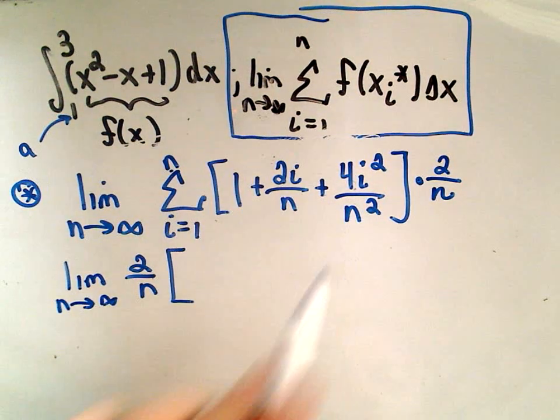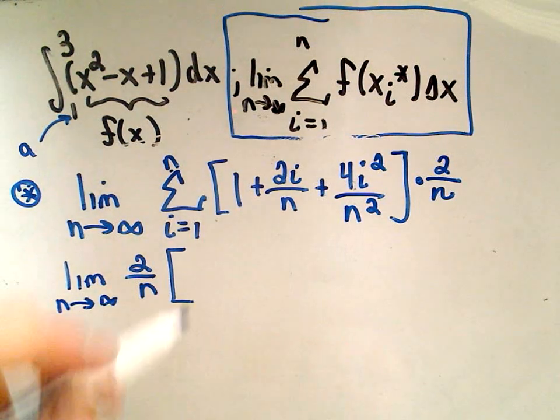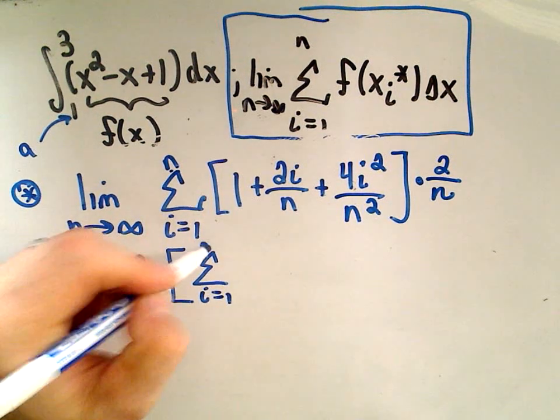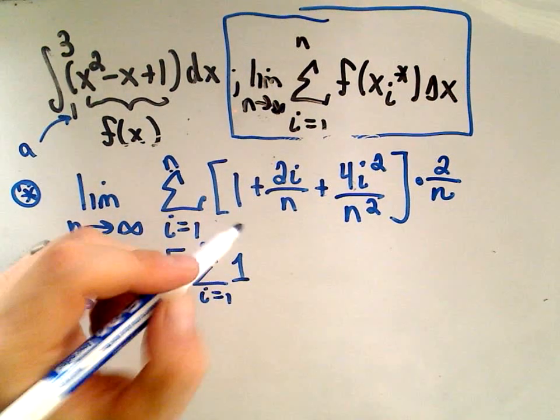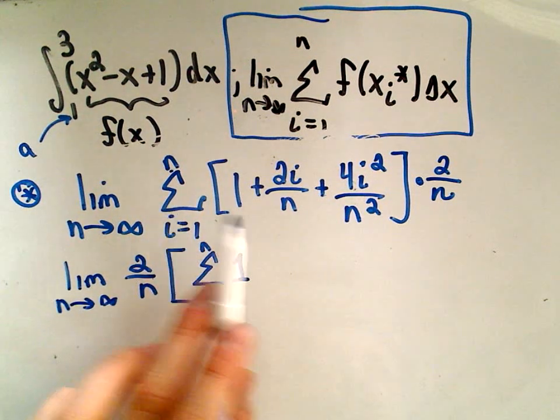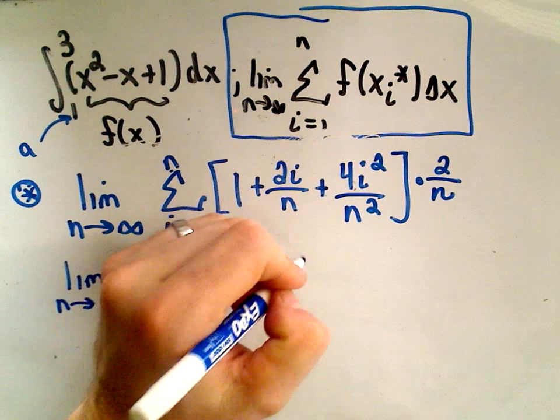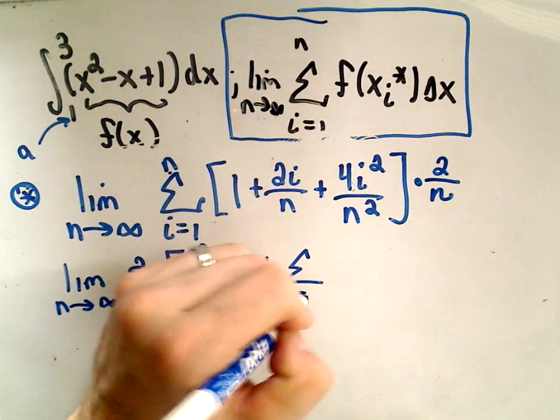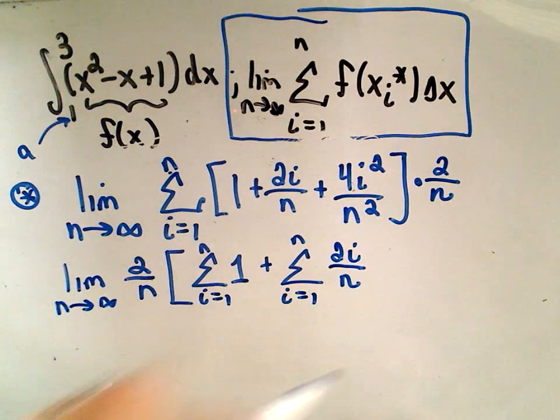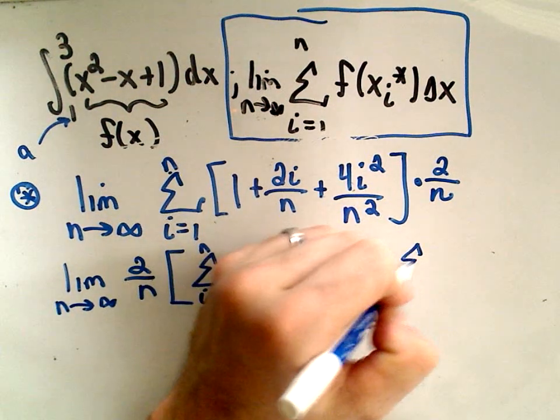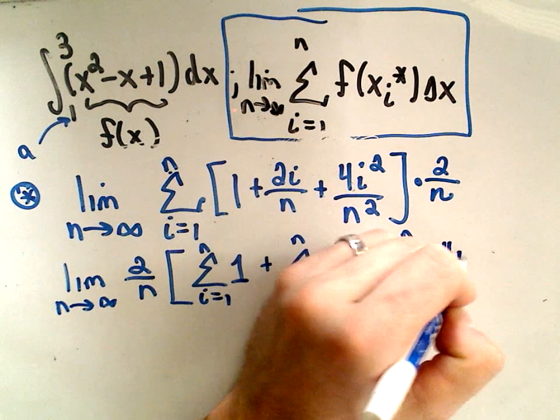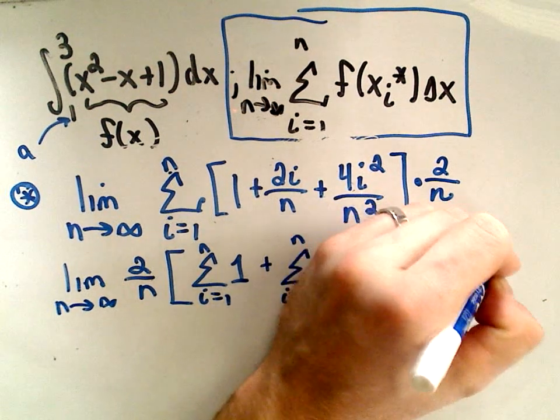Okay, when you have the summation of terms being added or subtracted, you can basically think about distributing that summation. You can sum each piece individually. So I'm going to rewrite this as the summation from 1 to n of just 1 plus the summation from i equals 1 to n of 2i over n plus the summation from i equals 1 to n of 4i squared over n squared.